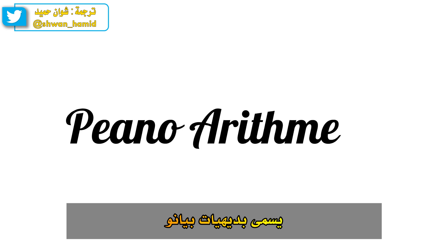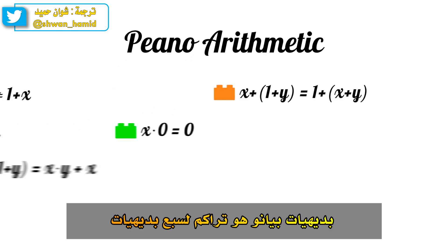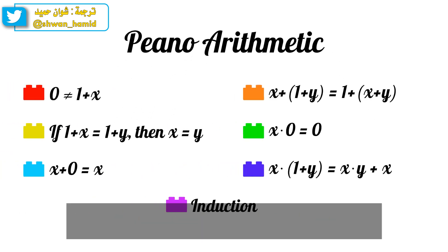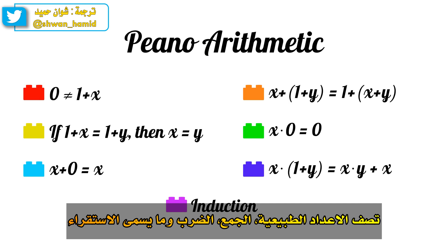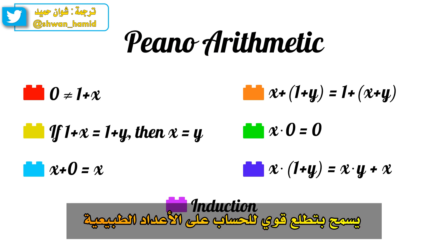For example, let's look at a math system called Peano arithmetic. Peano arithmetic is built up of just seven axioms that describe the natural numbers, addition, multiplication, and something called induction, which we'll talk about in a future video. Putting these simple axioms together allows for a powerful look at arithmetic on the natural numbers.